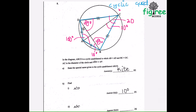Then the last part of number 5: find angle ADC. Since the angle subtended by the diameter is a right angle, it's 90 degrees. Or we can just add 10 plus 80 which is 90 degrees. So the answer for angle ADC was 90 degrees.